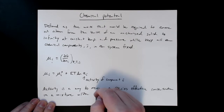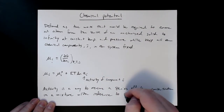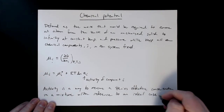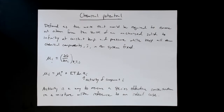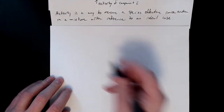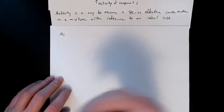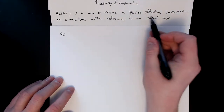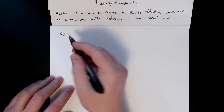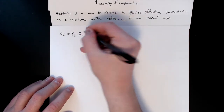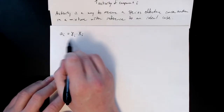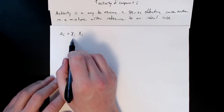Activity is a way to measure a species' effective concentration in a mixture, with reference to what we term the ideal case. We'll go through examples of what this means. We define the activity of component i as the product of two terms: the activity coefficient γ_i and the mole fraction x_i, so a_i = γ_i × x_i. We've had to define one more thing — the activity coefficient — but this allows us to relate the effective concentration to the actual mole fraction of that component.